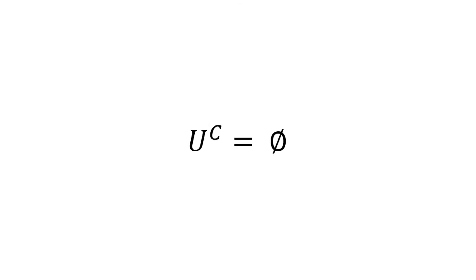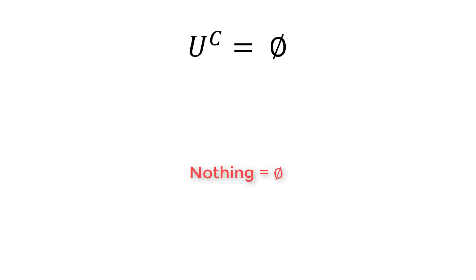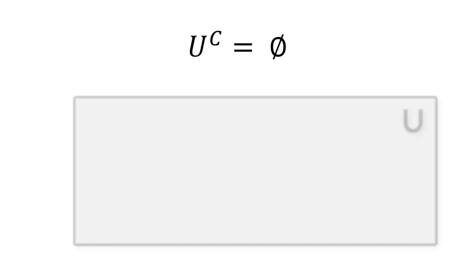The next property is: the complement of the universal set is the empty set. This is obvious — the universal set includes everything, so its complement is definitely the empty set, which includes nothing. In the Venn diagram, the universal set includes everything; taking its complement leaves nothing, which is the empty set. The opposite is also valid: the complement of the empty set is the universal set.